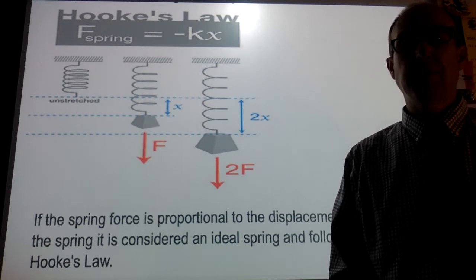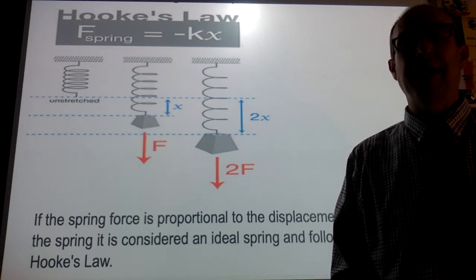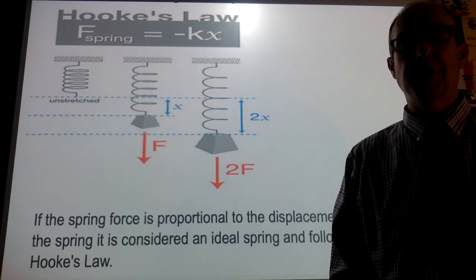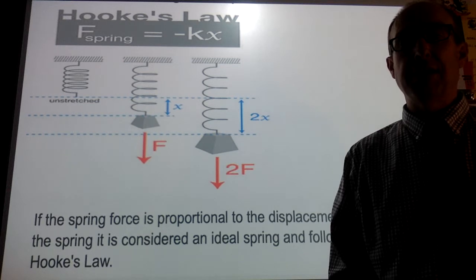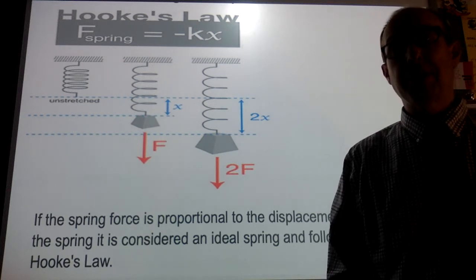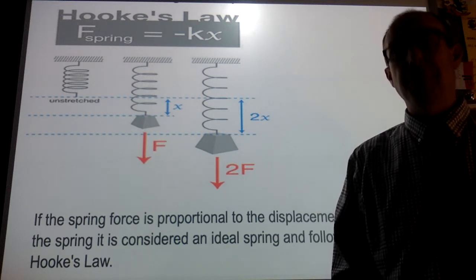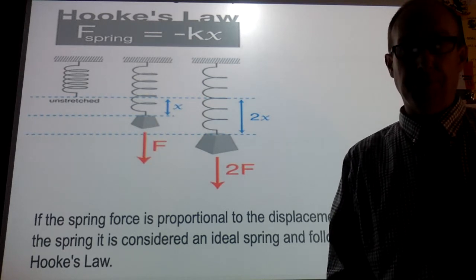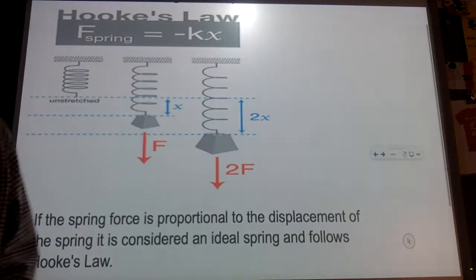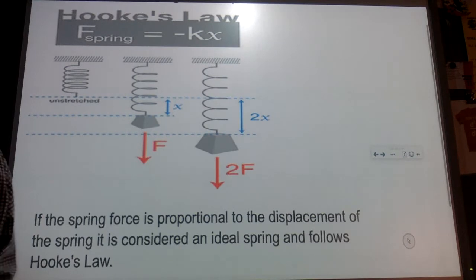Any spring that obeys Hooke's Law is known as an ideal spring. And the idea of an ideal spring is that if you stretch a certain distance with a given force, if you double that force, that distance would double. If you triple the force, the distance would triple. So the spring force is proportional to the displacement of the spring, and that's going to be Hooke's Law.